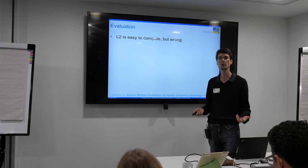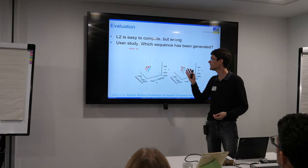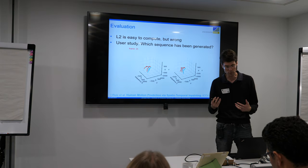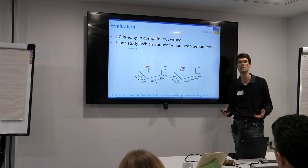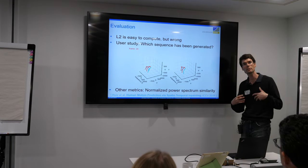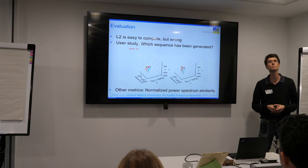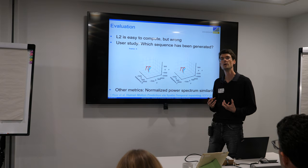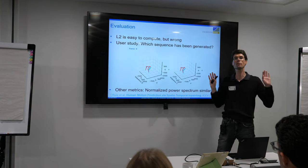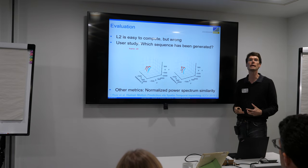However, evaluation still typically uses L2 error because it's easy to compute, even though it's wrong — it assumes a unimodal distribution of the future. One alternative is user studies, where humans act as discriminators judging which motion is realistic versus generated, but these are hard to reproduce. Another option is frequency-domain measures like normalized power spectrum similarity — much better than L2 norm, since predicting zero velocity gives a very low L2 error but is highly unrealistic, whereas the frequency domain gives a better description.